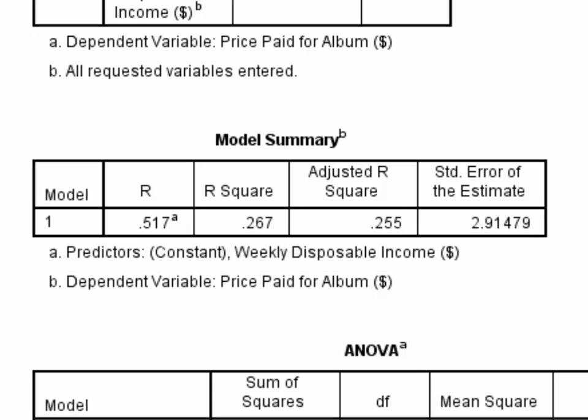R-squared is a sample statistic, and it tends to overestimate the true population effect. Consequently, it's recommended that you also report adjusted R-squared, which is said to be a better estimate of the proportion of variance in price paid that you could expect would be accounted for by disposable income in the population from which we've sampled. Here, the difference between the two figures is quite small anyway.